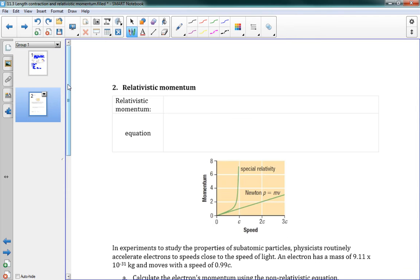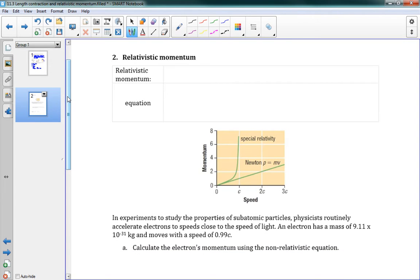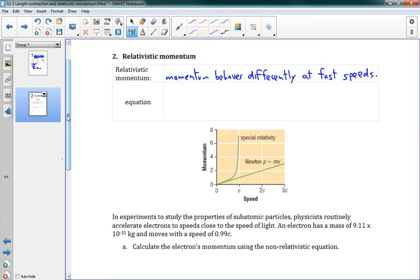We'll take a look on the next page here. We have a second idea, relativistic momentum. The idea is that momentum behaves differently from what we've seen, behaves differently at fast speeds. That shouldn't be too surprising. It seems like everything behaves a bit differently at fast speeds.